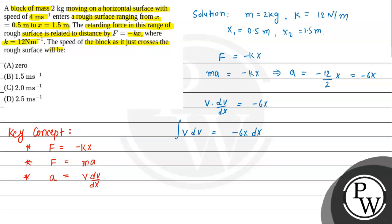Now both sides we will integrate. So v, when initially entering the rough surface, v1 was 4 meter per second. Now v2 we have to calculate. So v1 is 4 to v2.